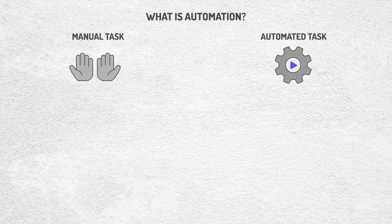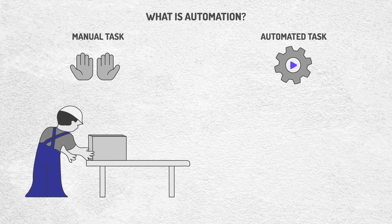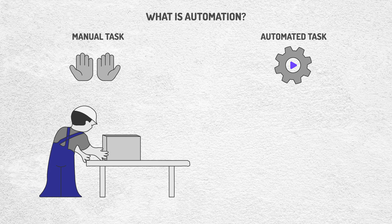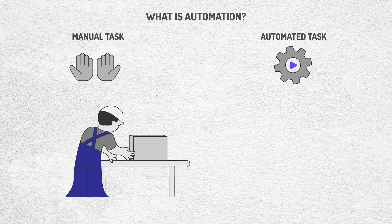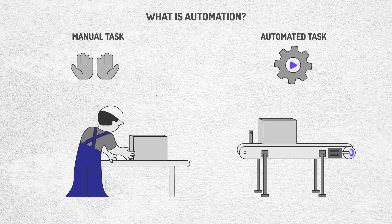First, we'll define in simple words what automation is. It's the use of technology to carry out tasks or processes automatically, without the need for constant human intervention.